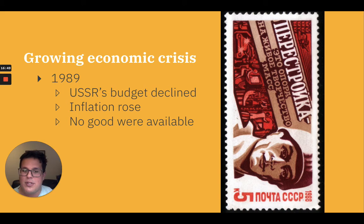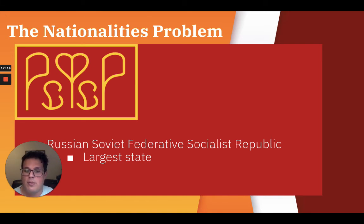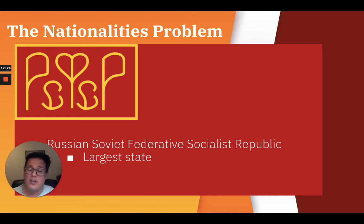By 1989, it was clear that Perestroika had not managed to resolve the country's economic difficulties. The USSR's budget revenue steadily declined while inflation rose and no goods were available. The USSR was a federation of 15 republics in which the Russian-Soviet Federative Socialist Republic was by far the largest state. Perestroika, Glasnost, and the collapse of communism in Eastern Europe led to a reawakening of nationalism in many constituent republic states that felt dominated by ethnic Russians. This is why the nationality problem was so key in the collapse of the USSR.